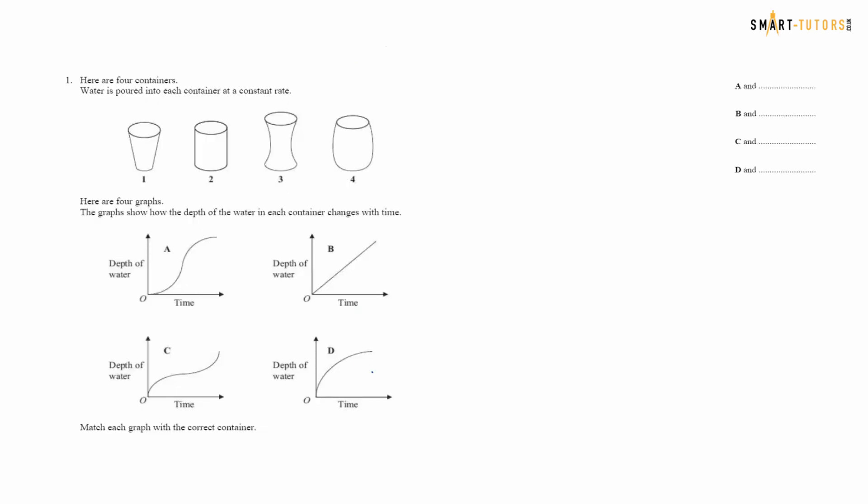Here are four containers and four different graphs. You need to match each graph to the container. Container number two has a regular cross section, so the water depth increases with time at a constant rate, giving a straight line. Therefore, graph B and container two are matching.